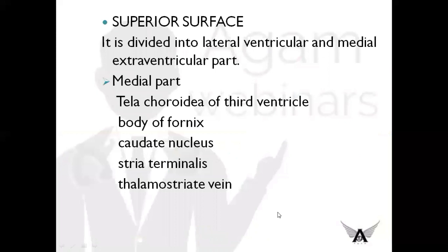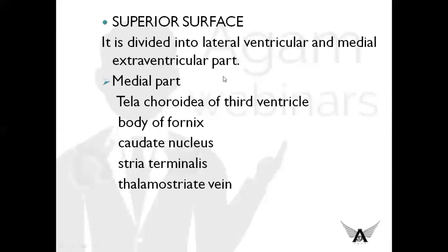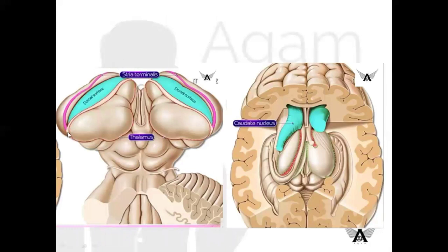Next, moving on to the superior surface, also called the dorsal surface. It is divided into two parts: the lateral ventricular part and the medial extra-ventricular part. The medial extra-ventricular part is related to the tela choroidea of the third ventricle, the body of fornix, the caudate nucleus, stria terminalis, and the thalamostriate vein. The stria terminalis separates the superior part of the lateral surface of the thalamus from the body of the caudate nucleus.